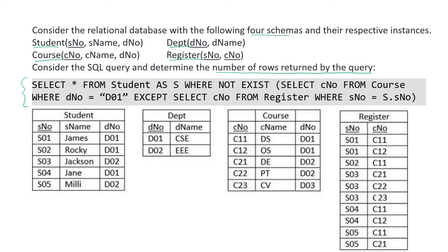Looking at the query: SELECT * FROM student AS S WHERE NOT EXISTS (SELECT C_number FROM course WHERE D_number is D01) EXCEPT (SELECT C_number FROM register WHERE S_number is S.S_number). Here EXCEPT means the set difference. This is a correlated query — for all instances of the student table we will independently be executing this inner subquery.